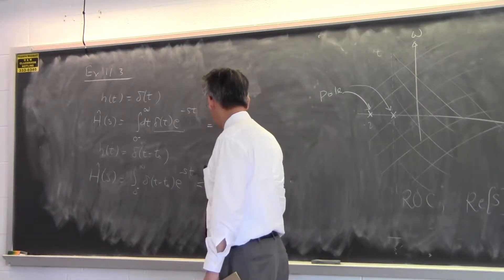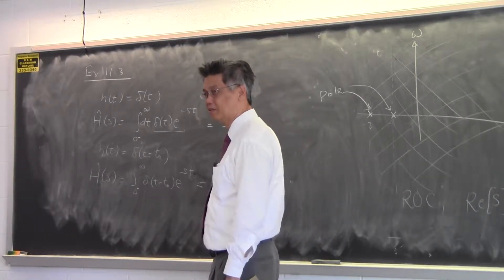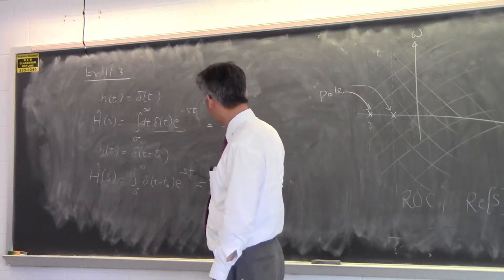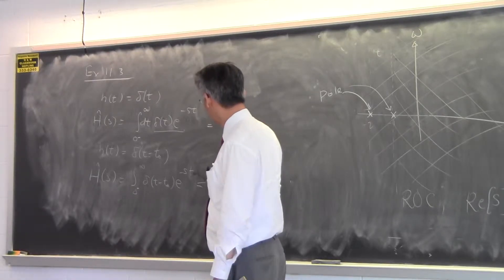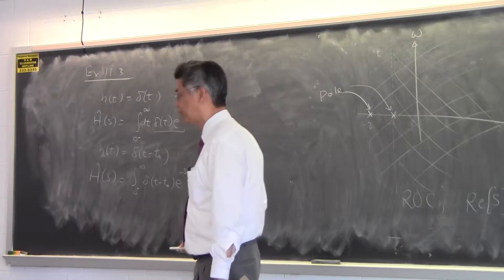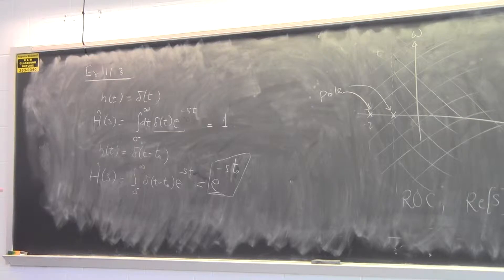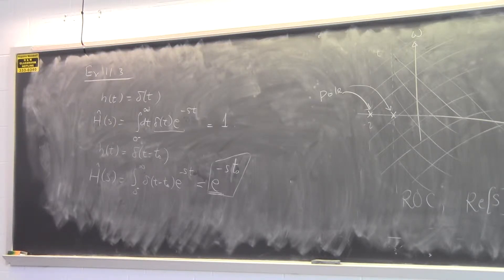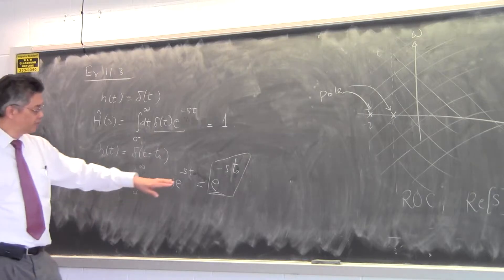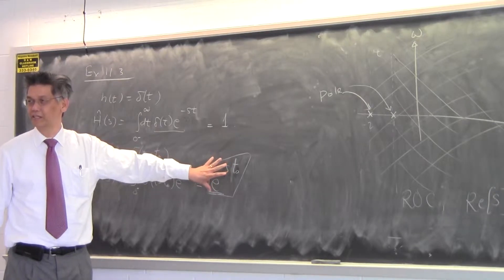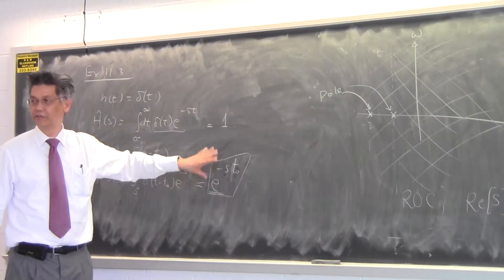This function exists and doesn't go to infinity everywhere in the finite complex plane as long as s doesn't become infinite. So you can say that the Laplace transform exists everywhere on the complex plane, or the region of convergence is everywhere on the complex plane. This thing will only diverge if s goes to minus infinity; on the finite part of the complex plane this is always well-defined.